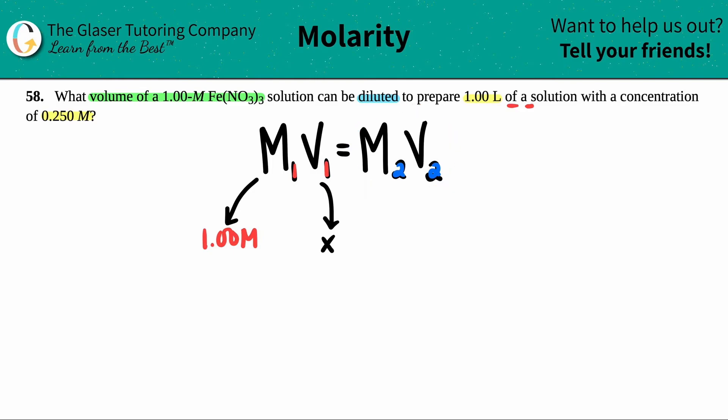This side is the other numbers, 1.00 liter of a solution with a concentration of 0.25. So this number is 0.250, and the corresponding volume is the 1.00 liters. And that's it. We just need to plug it into the formula and solve for X.